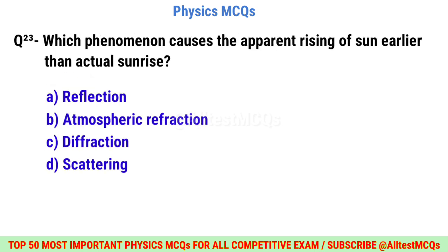Question number twenty-three: Which phenomenon causes the apparent rising of the sun earlier than actual sunrise? Correct option is B: Atmospheric refraction.